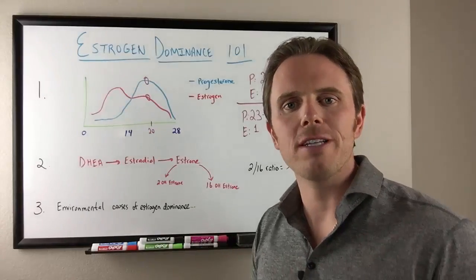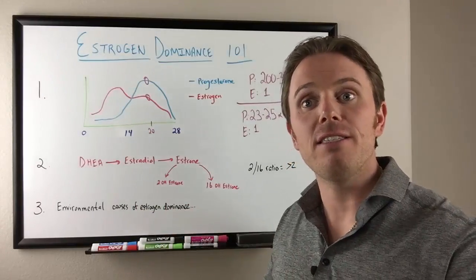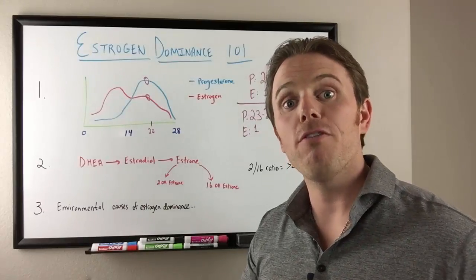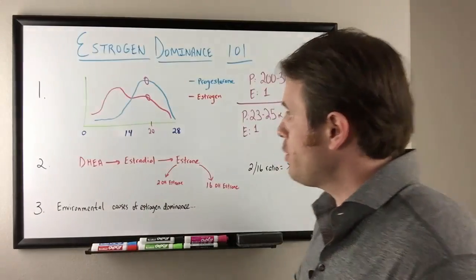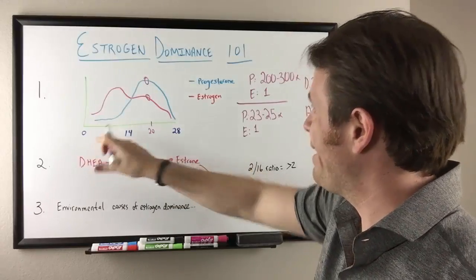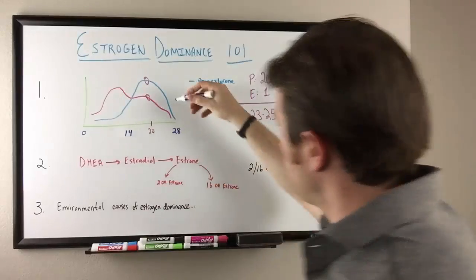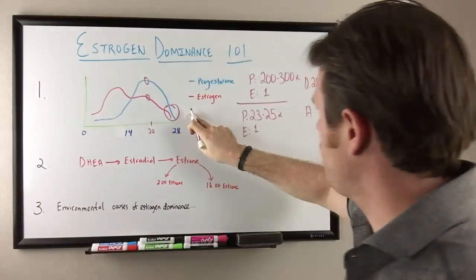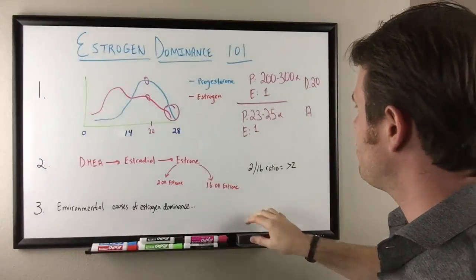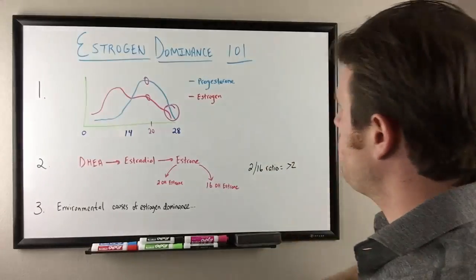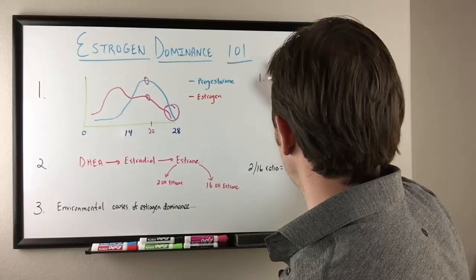So when we do a month long cycle, we can really delve in and see some of these imbalances. Let's walk through normal female hormone physiology briefly. So you see here we start off, I'm going to start from the end and then work forward. So we have this drop in hormones over here.